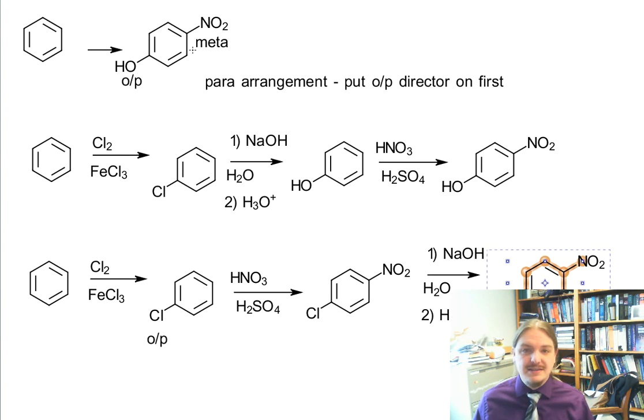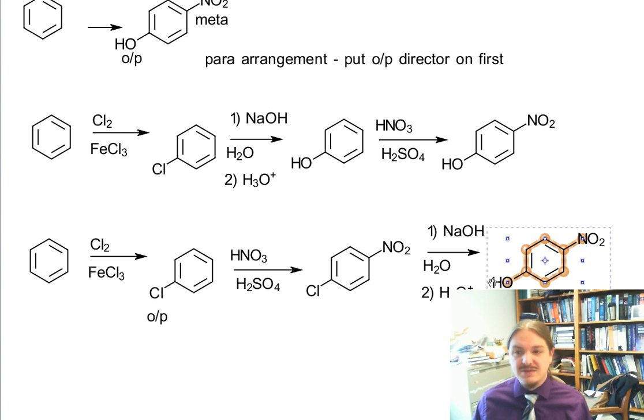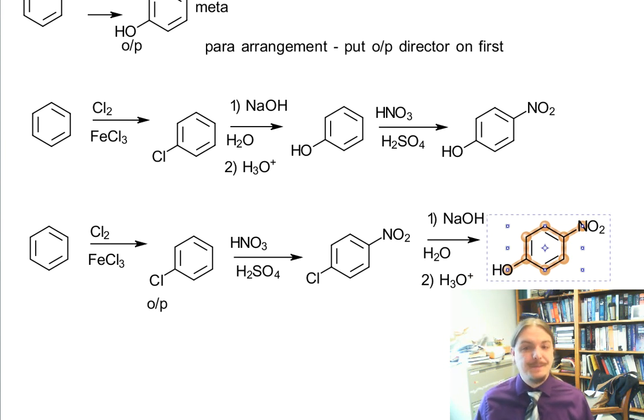But generally this analysis where we look at the substituents and the arrangement on the ring and make a guess at what we want to do first. And sometimes the sequence of events matters and sometimes it doesn't. In the next video, I'm going to work through some more complicated examples. Thank you for watching.